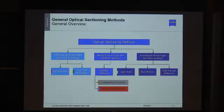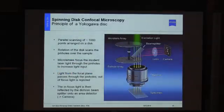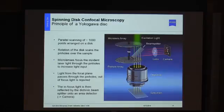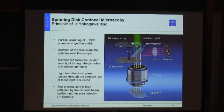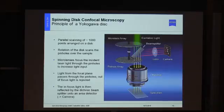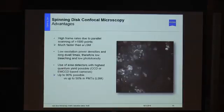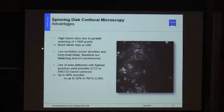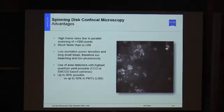Moving on to spinning disk systems — another detection strategy where we block out-of-focus light. The spinning disk system has two disks that rotate synchronously. Laser light passes through a microlens array, where it is focused onto the pinhole array. Light from the pinhole array exits through the objective onto the specimen, returns back, passes through a beam splitter, and falls onto the camera. This system scans more than one thousand focal points more or less simultaneously in parallel fashion, achieving very high frame rates.